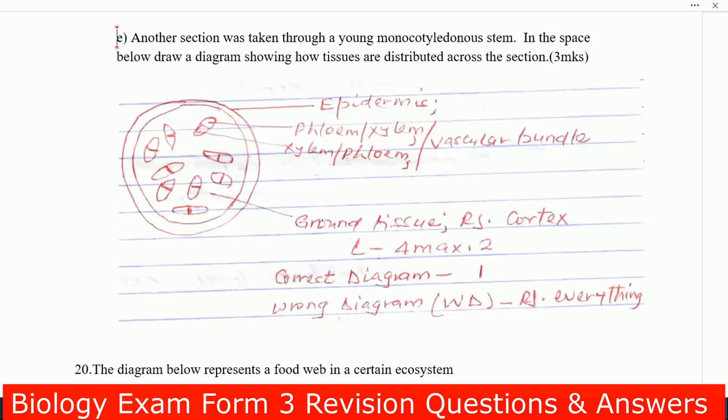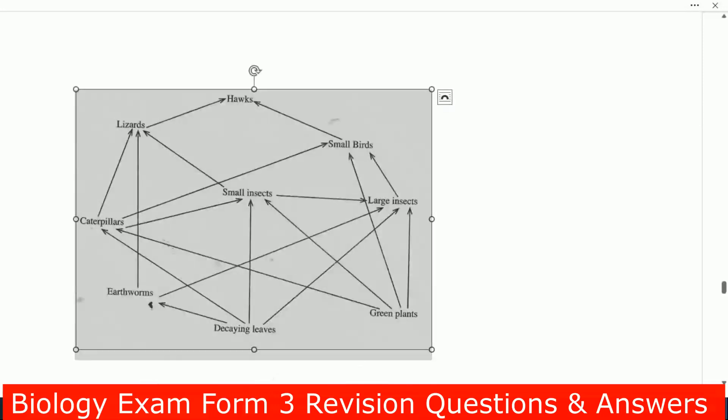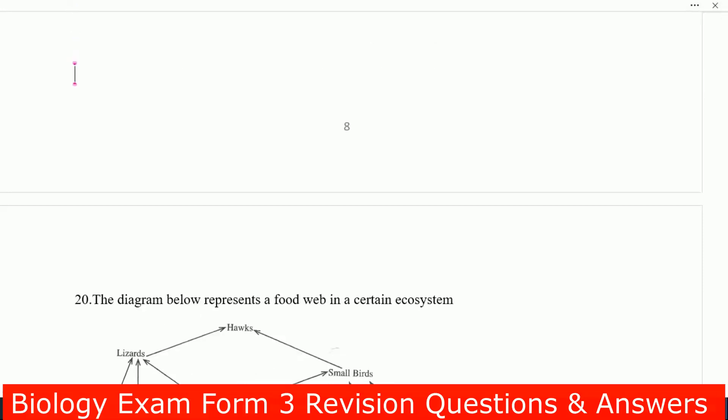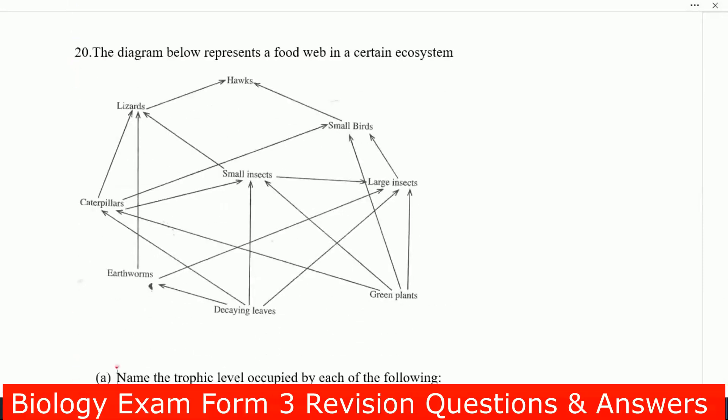From there, we have a diagram representing a food web. This is the food web. We have hawks, we have small birds, insects, ox eat lizards. You can see small birds feed on insects.